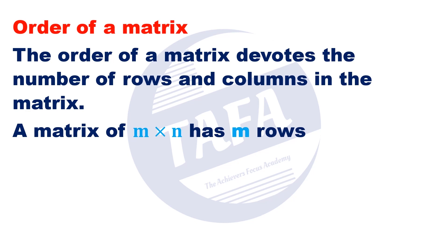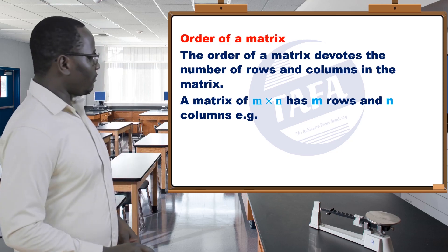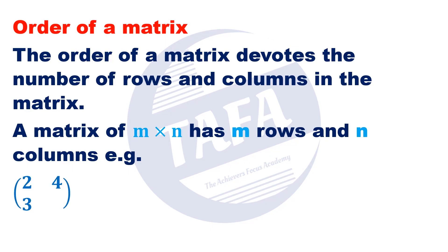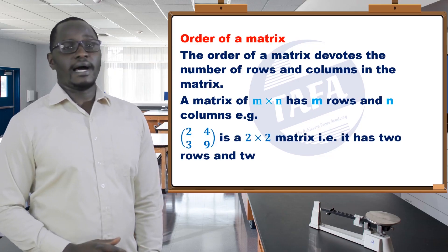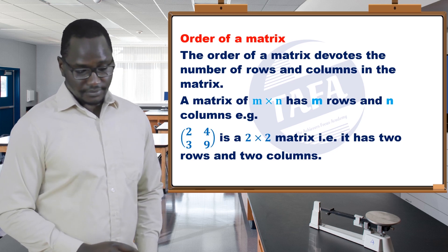It has m rows and n columns. For example, we have the matrix 2, 4, 3, 9. The rows are 2, 9 - that is the row - then the columns. You can see one and two, three. This is a 2 by 2 matrix which has 2 rows and 2 columns.